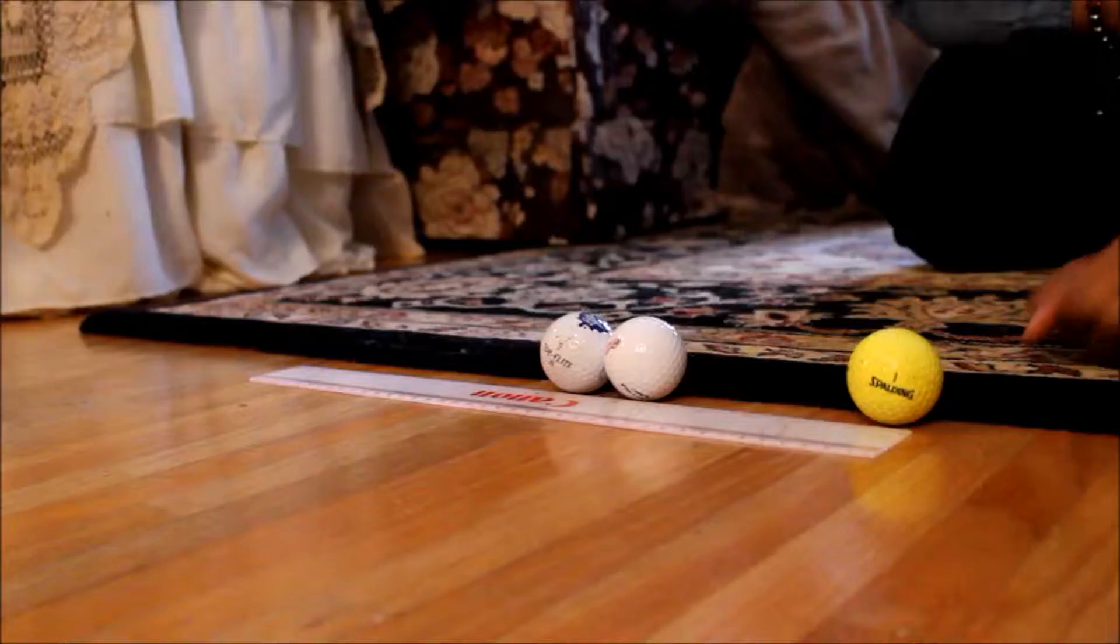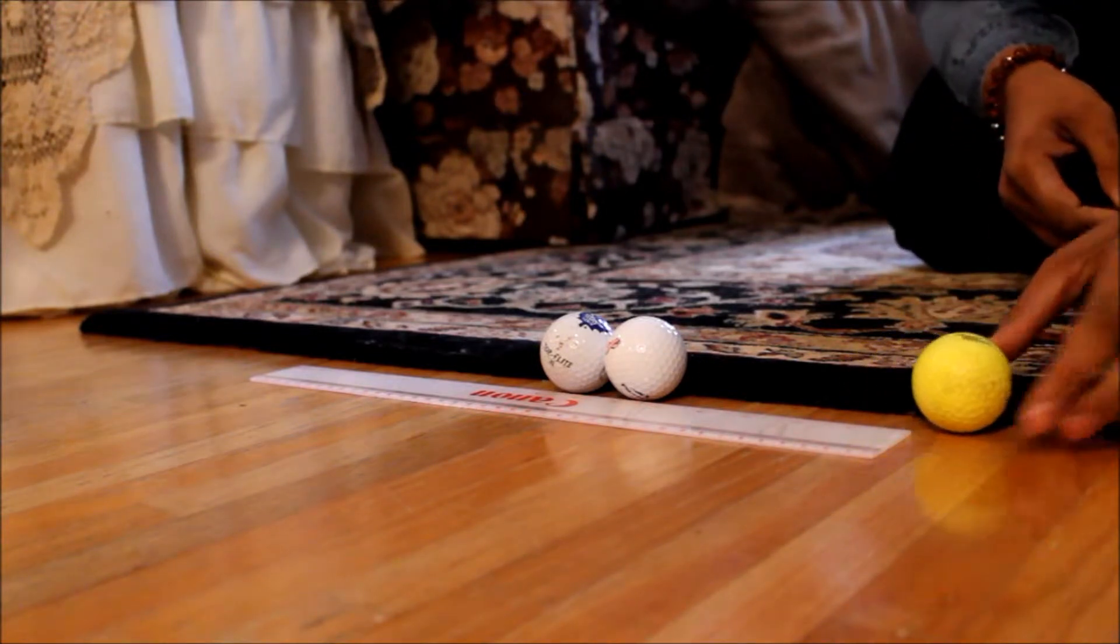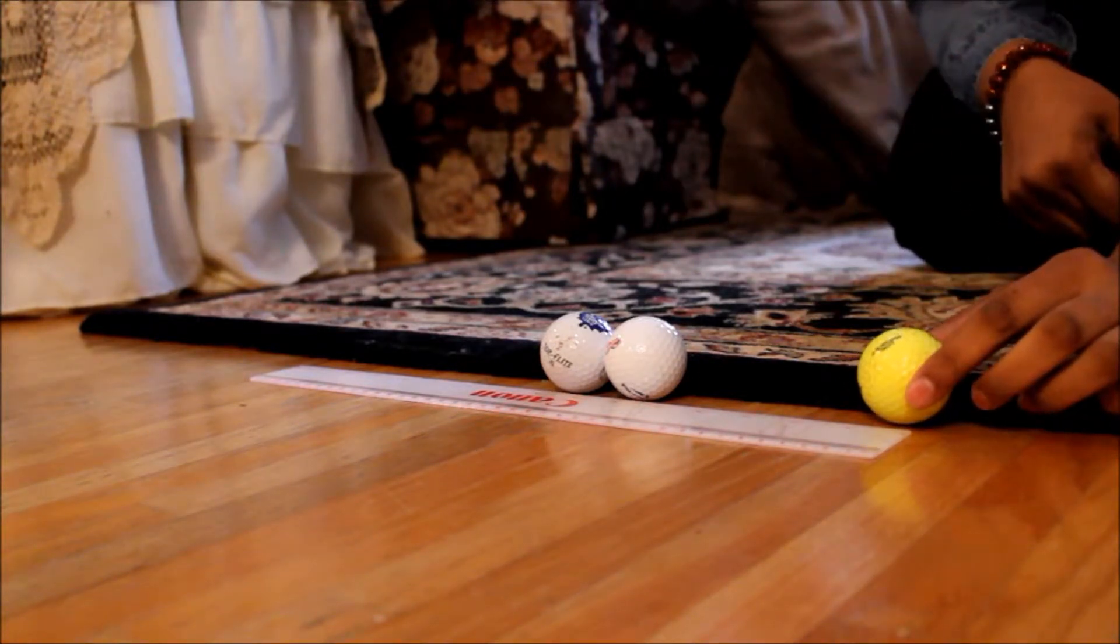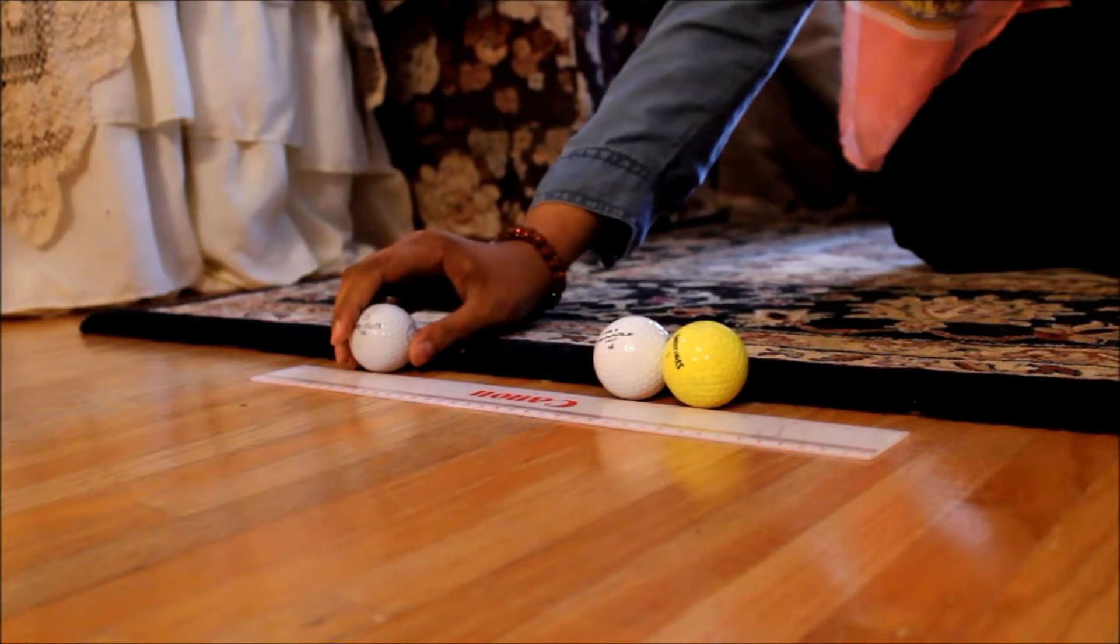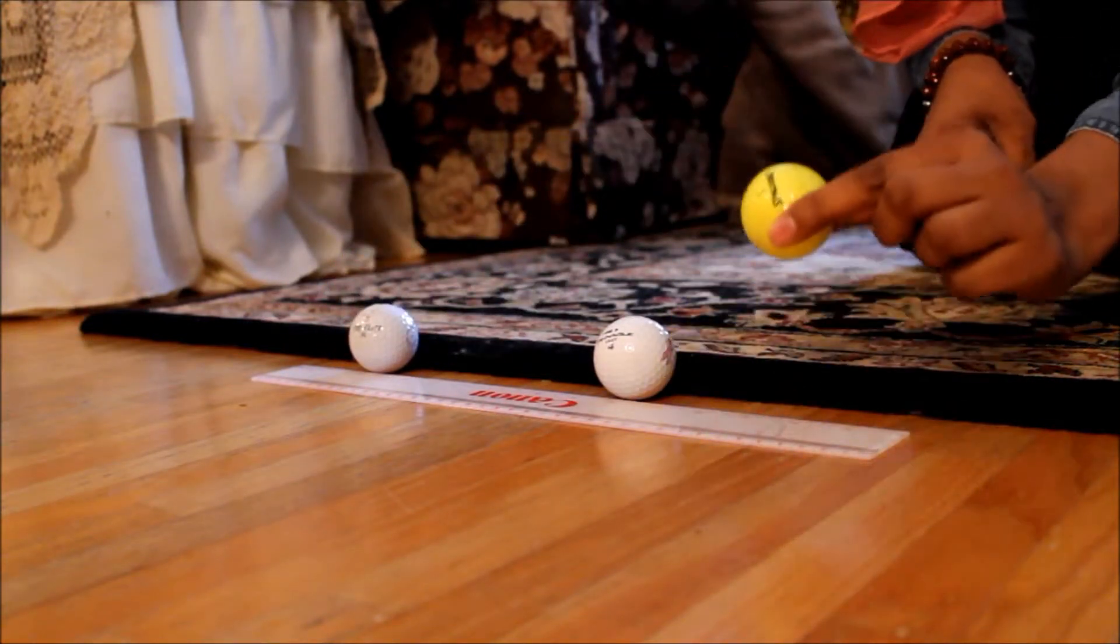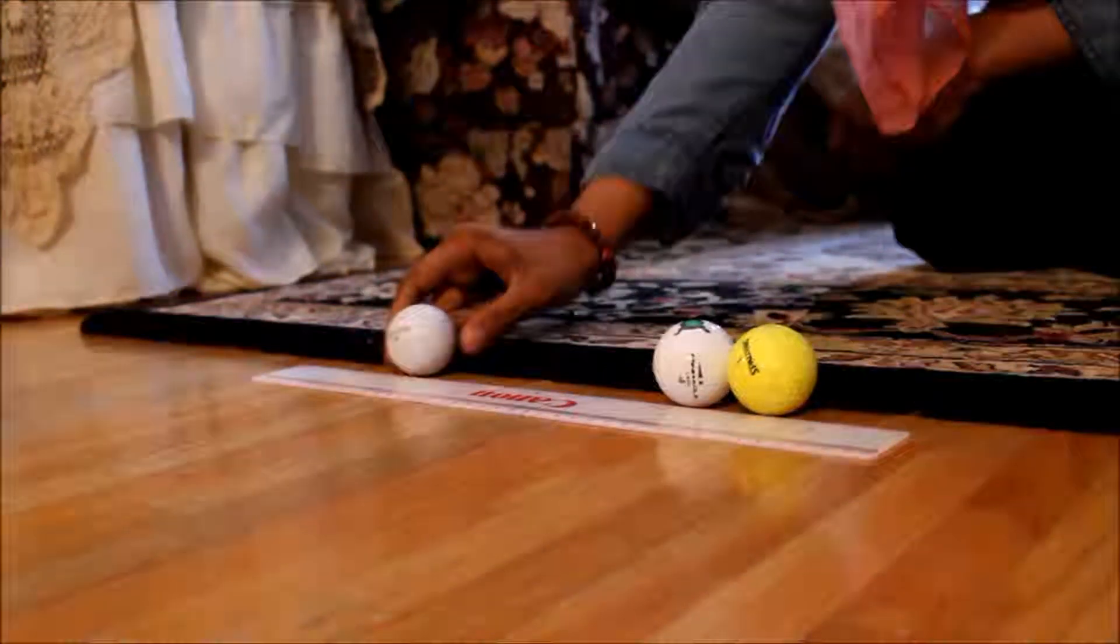Try this at home! So say I roll a golf ball with a mass of 0.045 kilograms, and imagine it travels at approximately 0.5 meters per second towards another golf ball with the same mass. The momentum from the first golf ball will transfer to the second golf ball and to the third golf ball which will then move. The conservation of momentum states that the momentum before equals the momentum after, meaning the mass of the first object multiplied by the velocity of the first object is equal to the mass of the second object multiplied by the velocity of the second object.